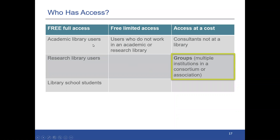Academic and research library users have free access to everything, but they will only see data from their particular institution. If any of you are staff members at a consortium but don't work at a particular institution or library, you currently would have limited access. Group access allows data to be collected across multiple institutions to help with advocacy or measuring initiatives on the group level.